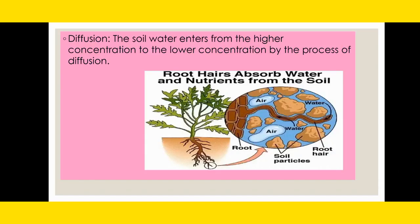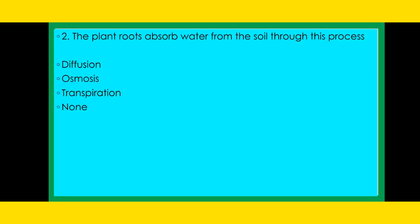Moving on to the next topic: diffusion. The soil water enters from higher concentration to lower concentration by the process of diffusion into the plants. Our second question: The plant roots absorb water from the soil through this process — is it diffusion, osmosis, transpiration, or none? The right answer is diffusion.